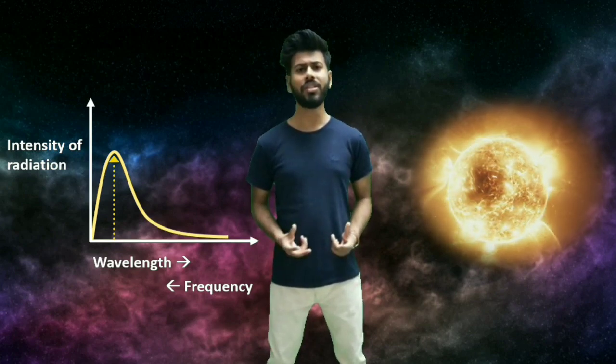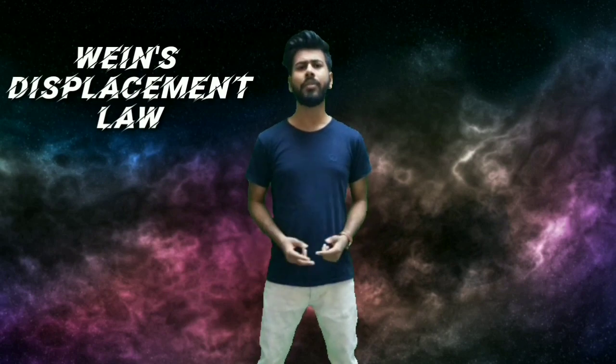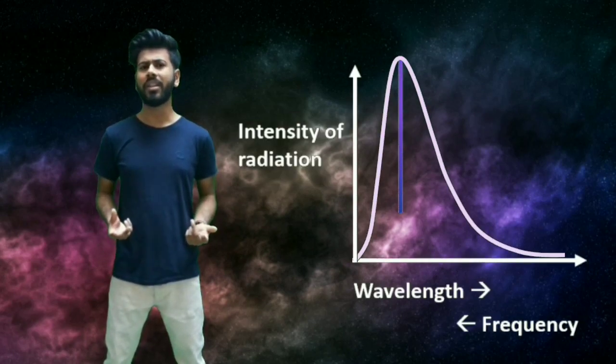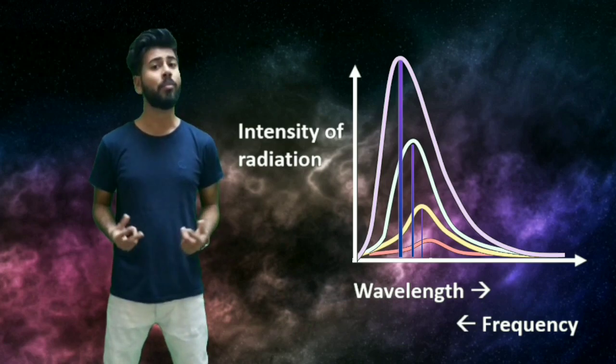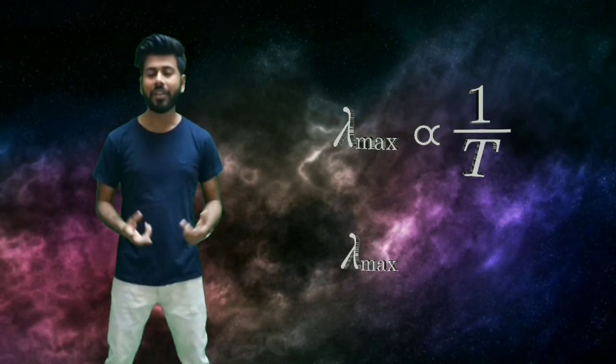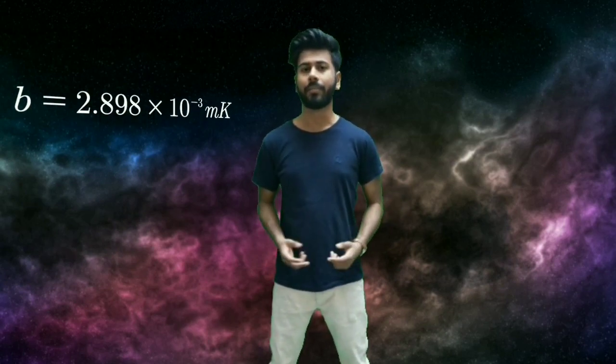Does this mean yellow is the only wavelength emitted in the maximum amount by all stars? No. To understand this, let's go to Wien's displacement law. This law states that the peak wavelength of a blackbody radiation curve changes with the temperature of the black body. When the temperature of a black body increases, its peak moves towards shorter wavelengths. The peak wavelength is inversely proportional to temperature. This can be written as: peak wavelength multiplied by temperature equals a constant, which is 2.898 × 10⁻³ meter-Kelvin. So if we know one variable, we know the other.